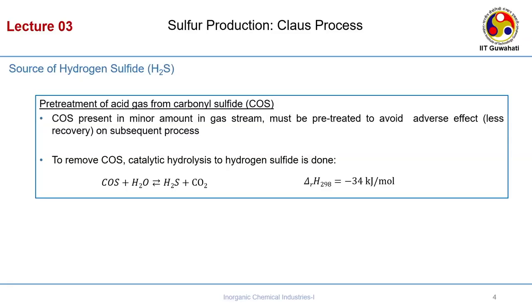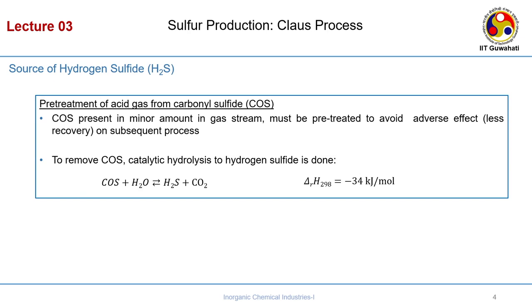In the pretreatment step, carbonyl sulphide is present in minor amounts in the gas stream and must be pretreated to avoid adverse effects on subsequent processes. Catalytic hydrolysis converts this into hydrogen sulphide. If carbonyl sulphide is present, you perform catalysis with water to form hydrogen sulphide plus carbon dioxide. Most plants are fully equipped to separate both these gases together — these are called acid gas.